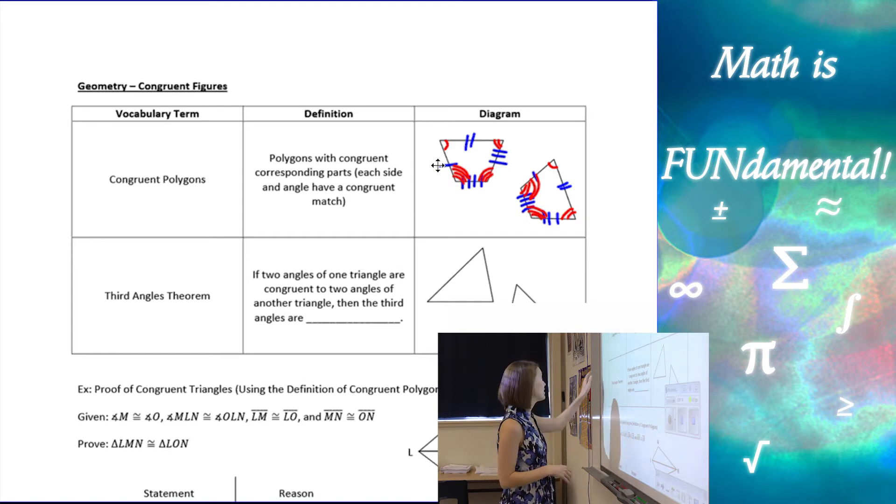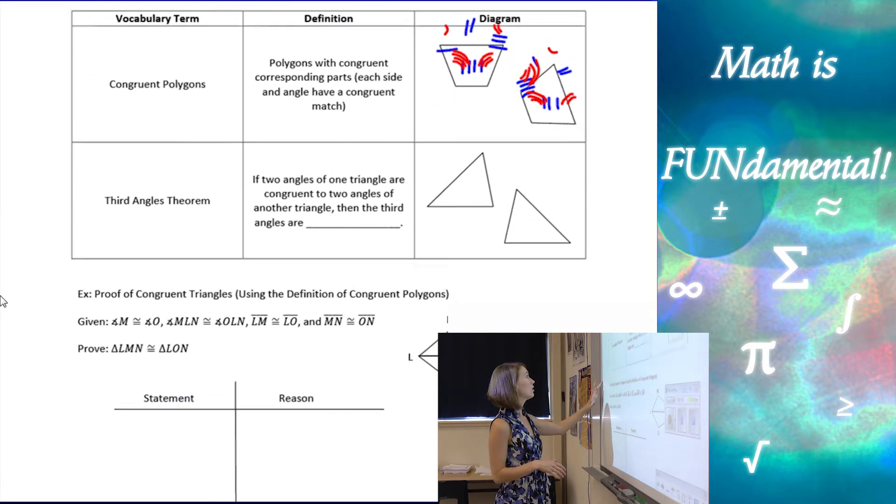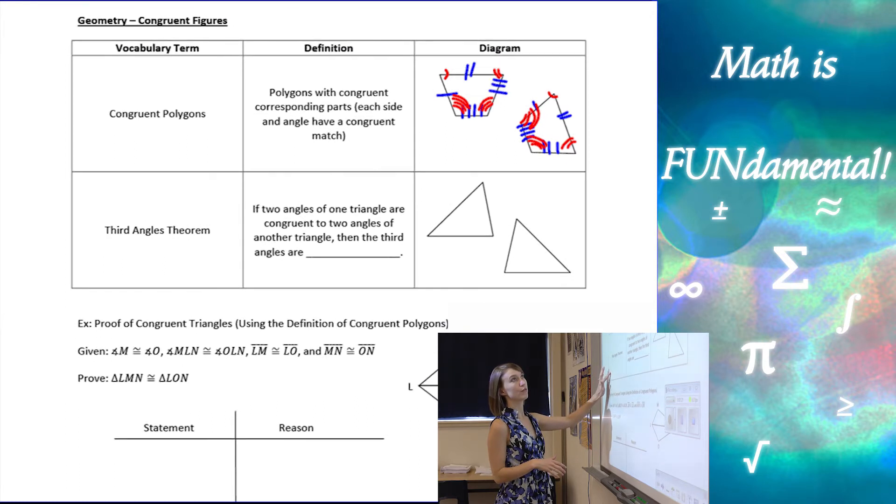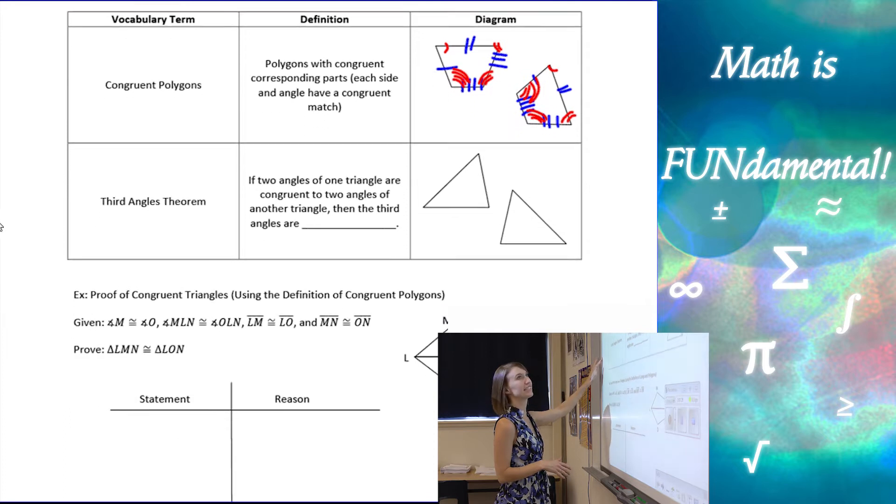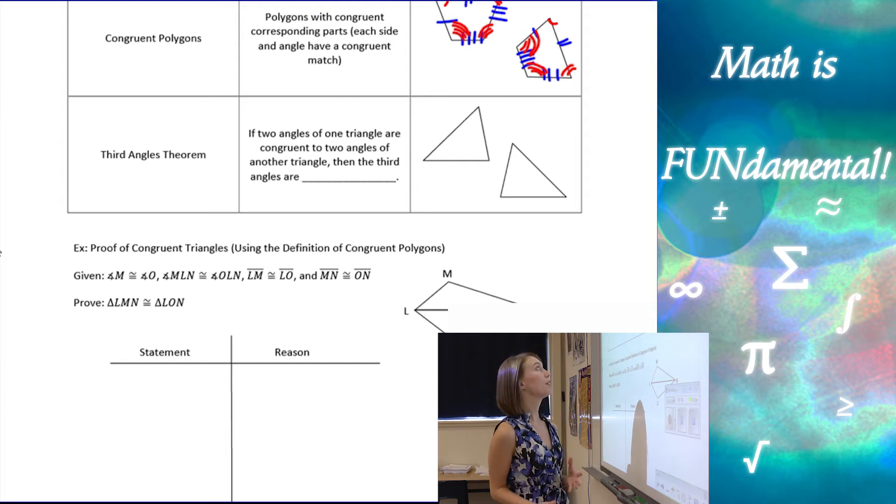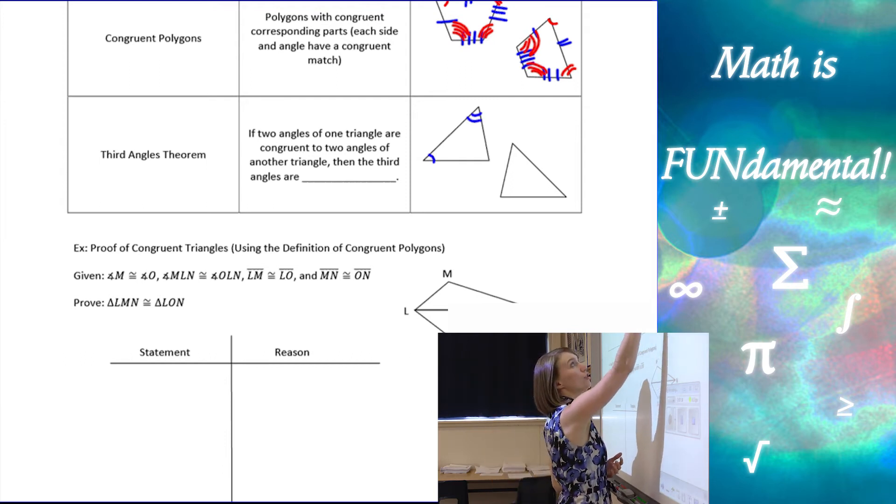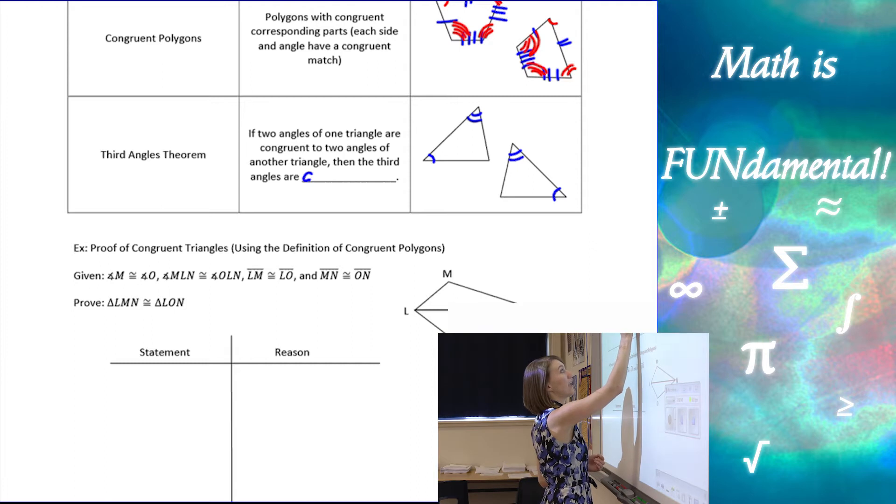Next we have a definition called the third angles theorem. Looks like I moved my picture just a little bit. Okay, fixed it. The third angles theorem is when we have two triangles, and if we know that two angles of one triangle are congruent to two angles of another triangle, then that means the third set of angles are going to also be congruent.